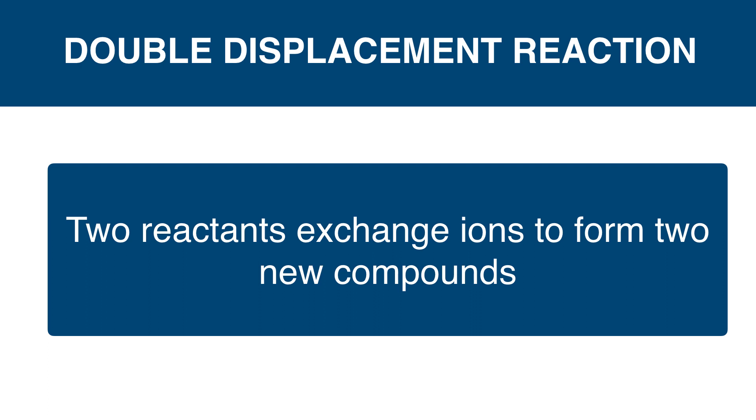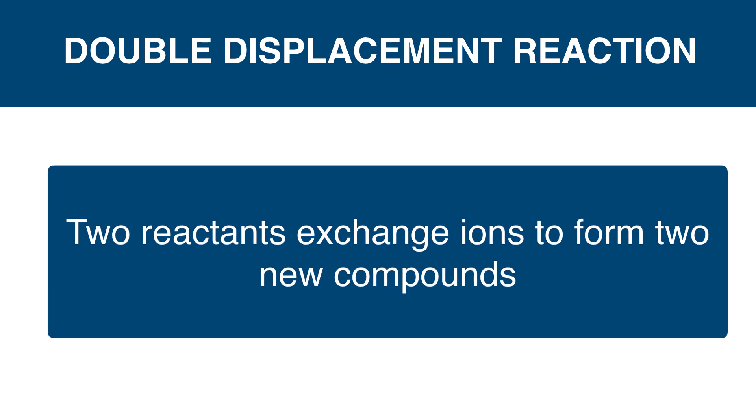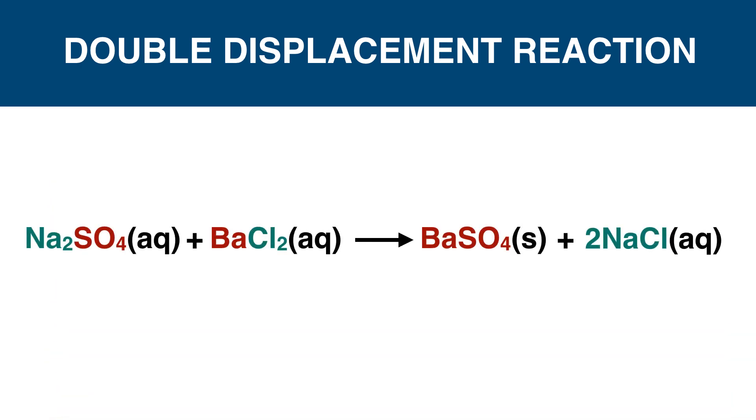The fourth type of chemical reaction is double displacement reaction. A reaction in which both the reactants exchange their ions to form two new compounds is a double displacement reaction. One of the products of this reaction is in precipitate form, so this reaction is also known as a precipitation reaction. For example: Na2SO4 + BaCl2 → BaSO4 + 2NaCl.